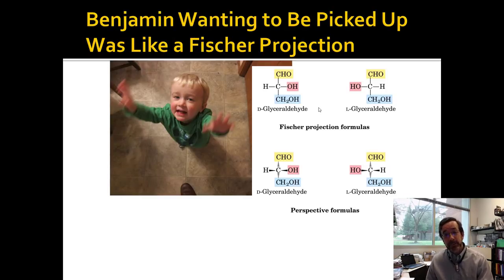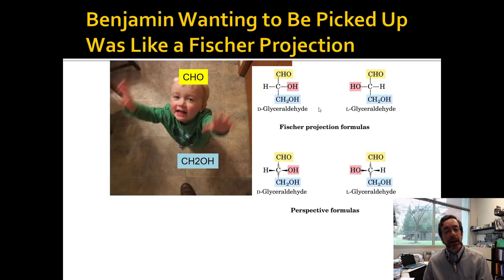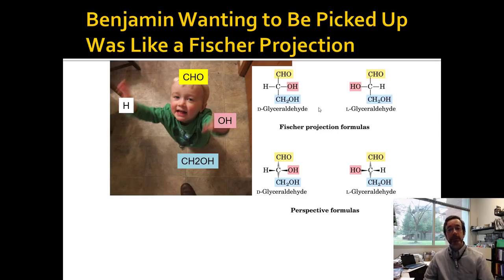The way to remember how Fischer projections work is with the example of Baby Ben. He actually has four points coming out of his center — his torso is the carbon at the center, the chiral carbon. He has his head, his feet, and his two hands as the four groups attached to that chiral carbon. If his head is an aldehyde, his feet are a CH₂OH group, his right hand is an H, and his left hand is an OH, then he's exactly like a model of glyceraldehyde. So a Fischer projection is like Baby Ben wanting to be picked up.